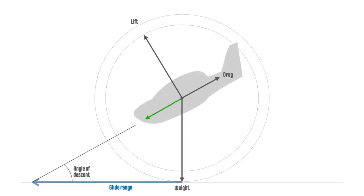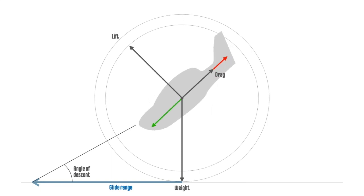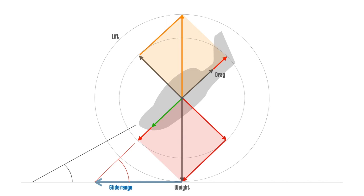When drag is increased, by extending flaps for example, the angle of descent becomes steeper and glide range becomes shorter. For the airplane to maintain its airspeed, the forward weight component must be greater. Lift is further reduced as the opposing weight component is also reduced.